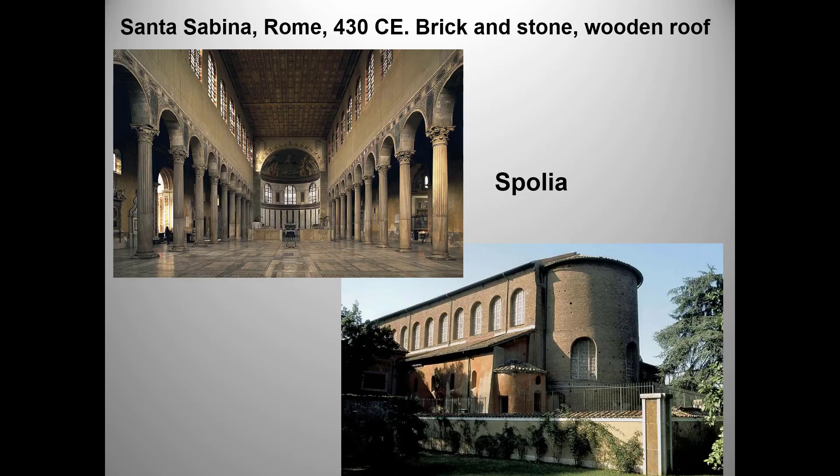Trust that you watched the excellent Khan Academy video on this church because I'm going fast. What kind of columns do you see? They're Corinthian — note the acanthus leaves. These were taken from older Roman buildings; the term for architectural recycling like that is spolia. We've seen this before in the mosque of Córdoba. The basilican features include a high flat roof, side aisles with a lower roof — you can see them sticking out in the exterior photo — and a rounded apse at one end.